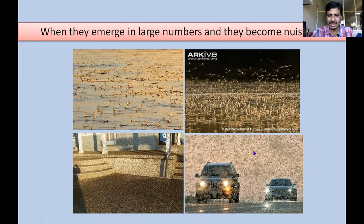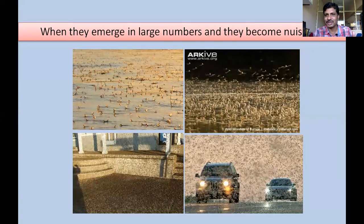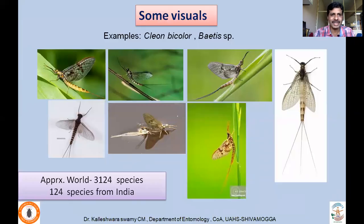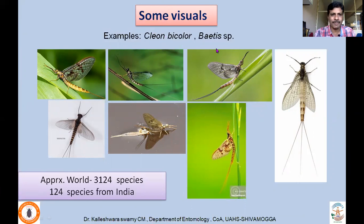When they emerge in large numbers near large dams and water bodies, millions of mayflies emerge and can become a nuisance, darkening and blocking roads. Otherwise, in the aquatic ecosystem, they serve as food for fishes and other organisms and form a very important component of the food web. Beginners can easily recognize these mayflies, especially near water bodies where they come to light. Examples include Cloeon bicolor. Approximately 3,124 species have been described worldwide and 124 species in India.